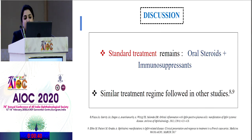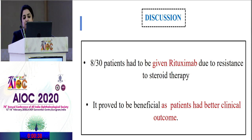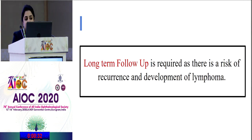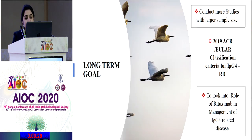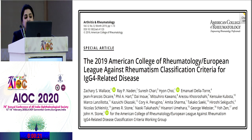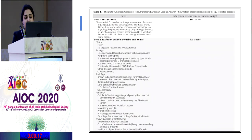Standard treatment remains oral steroids and immunosuppressants. Eight patients given rituximab had better clinical outcomes, and rituximab has consistently shown promising results in resistant and recurrent cases. Long-term follow-up is essential due to the risk of lymphoma development. My long-term goal is to conduct studies with larger sample sizes to further examine the role of rituximab, and to apply the newer 2019 American College of Rheumatology and European League Against Rheumatic Diseases classification criteria.